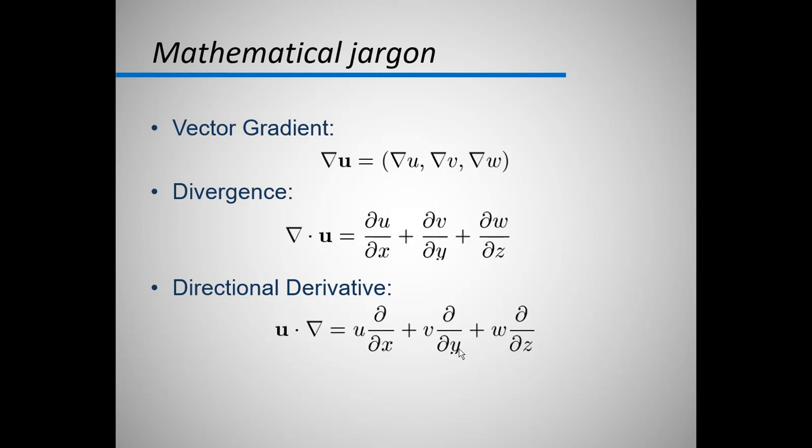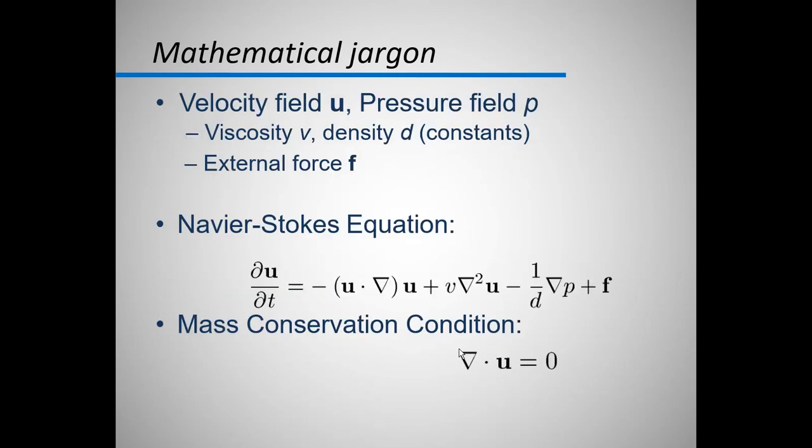So we have velocity field u, pressure field p, viscosity ν, density d or ρ which are constants, and external force f. So combining these we can form the Navier-Stokes equation as ∂u/∂t = -(u·∇)u + ν∇²u - (1/ρ)∇p + f. You should, I would recommend that you should never write this equation. Otherwise it's not very hard to learn by heart. The reason is that it's written in one of its basic forms.